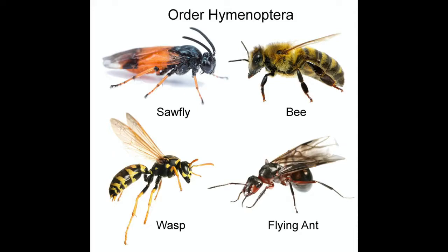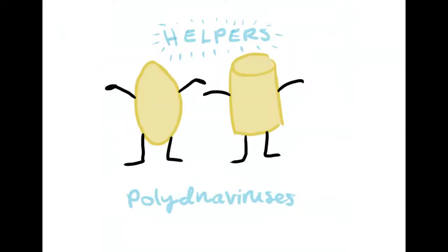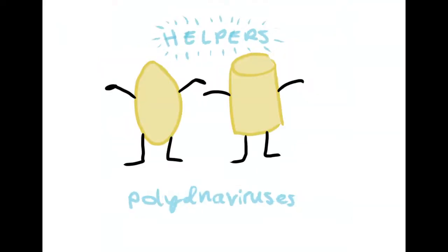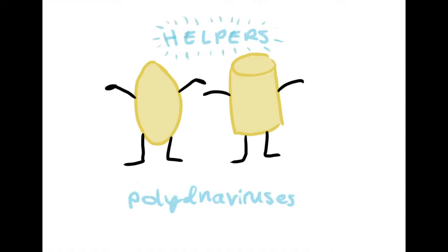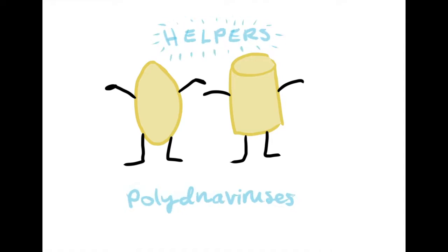Rather than cause diseases in its host, the polydnavirus actually assists its host's reproduction. Consequently, the wasp and the virus exist in an obligatory symbiotic relationship.